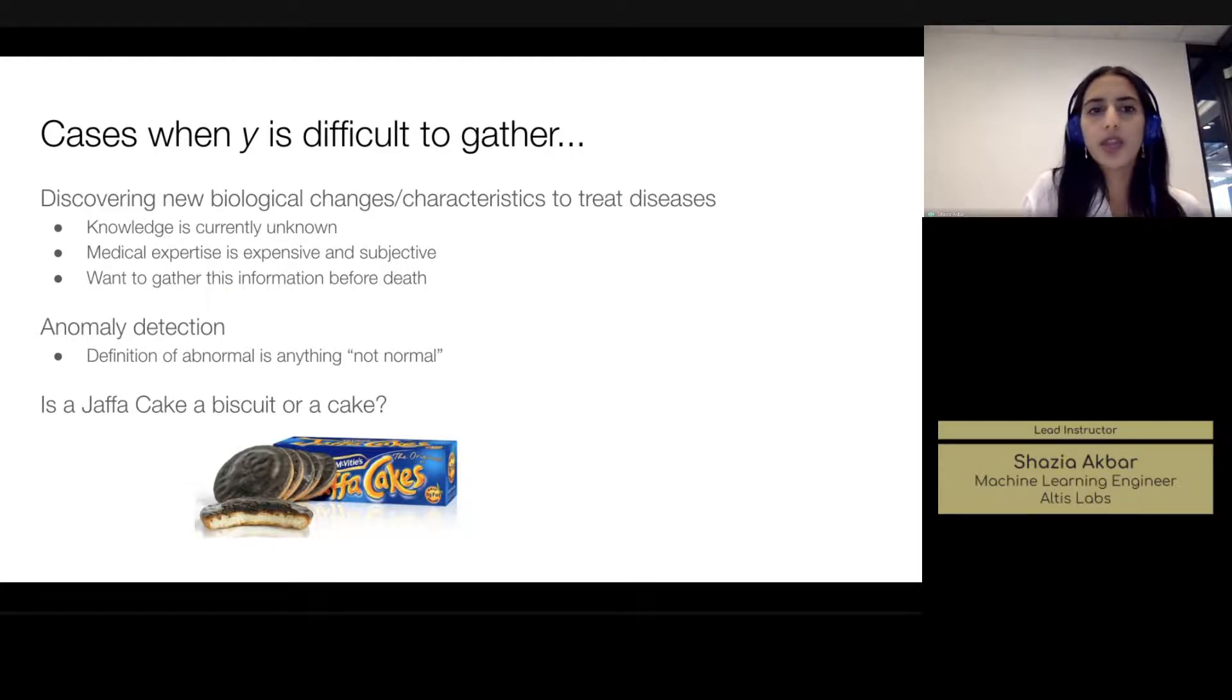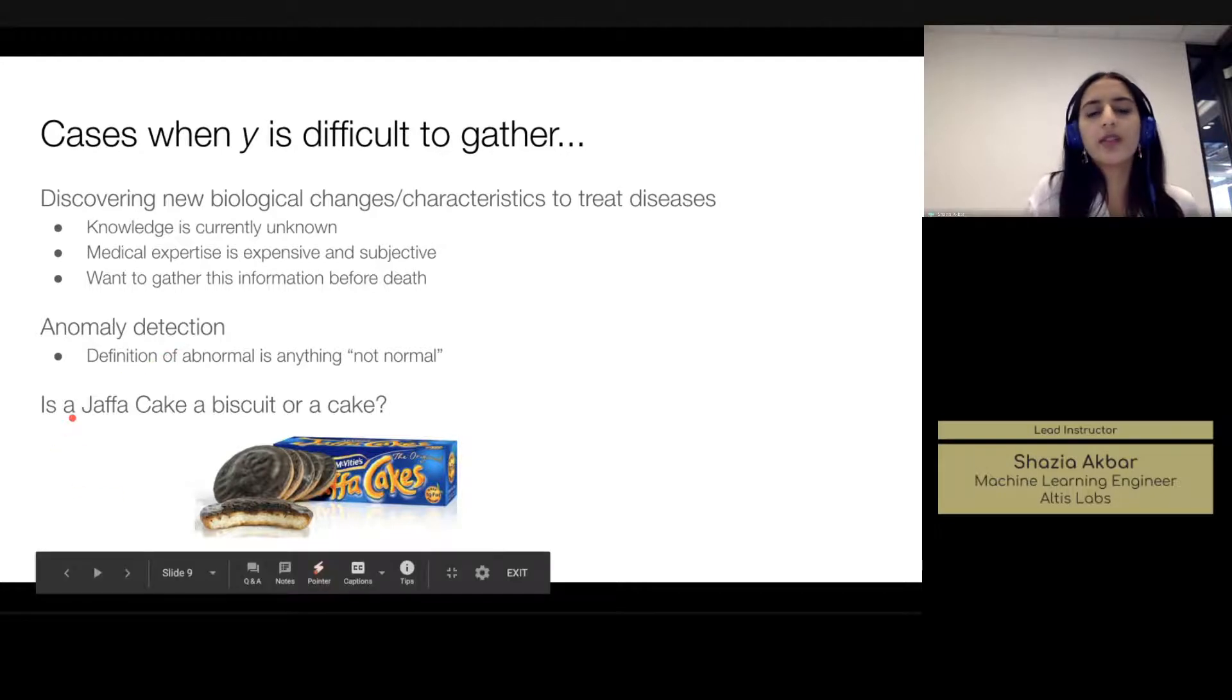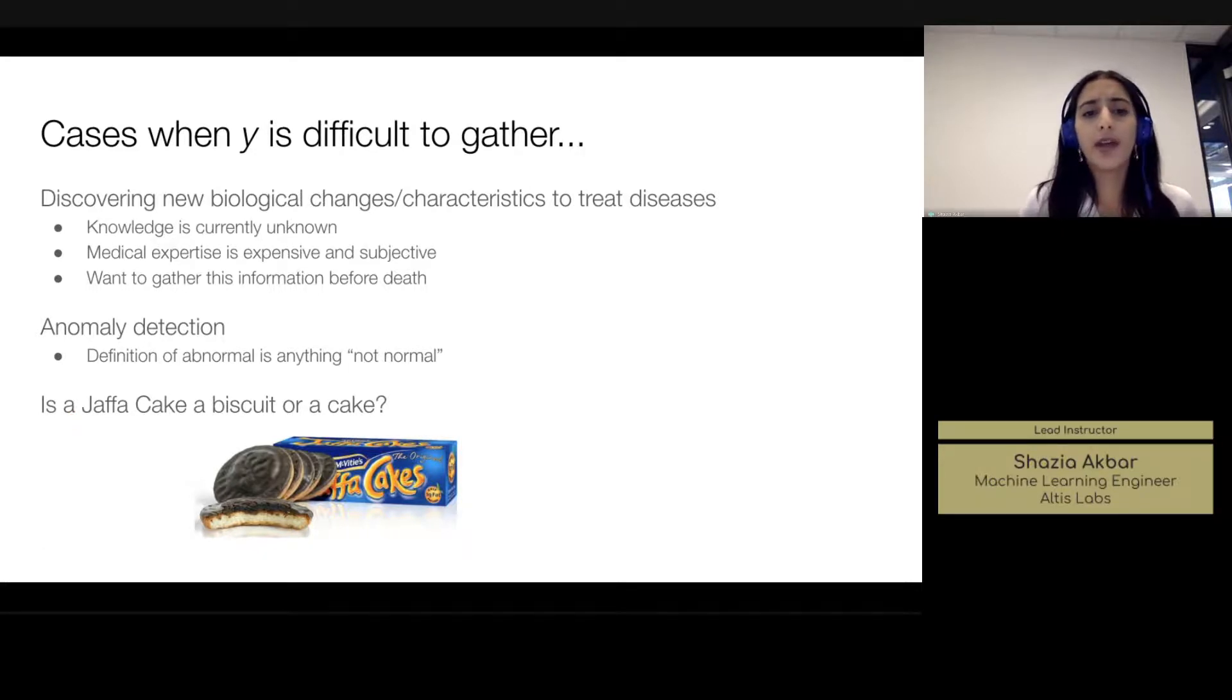And for things like survival prediction and other biological changes that you're interested in, in order to prevent death for example, we can't wait for the final outcome and then measure it. We have to get this information beforehand. Other cases in which y is difficult to gather is anomaly detection. Again, you don't want to wait for something abnormal to occur because either it doesn't happen very often and you can't constantly monitor the situation, or it's just too risky to wait till an anomaly occurs.